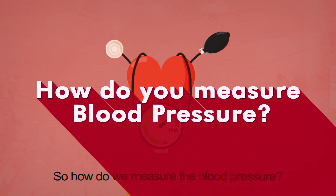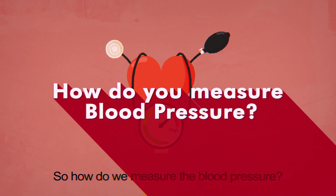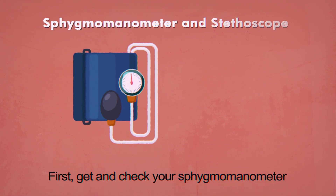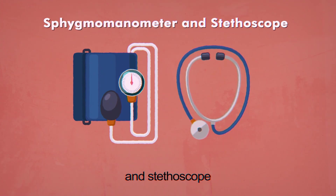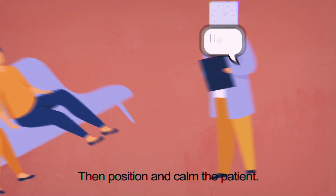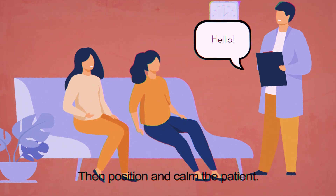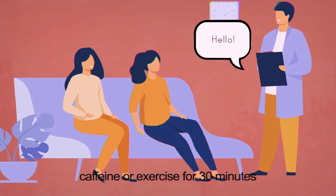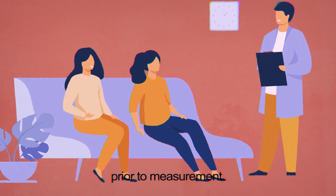So, how do we measure the blood pressure? First, get and check your sphygmomanometer and stethoscope. Then, position and calm the patient. The patient should avoid smoking, caffeine, or exercise for 30 minutes prior to measurement.